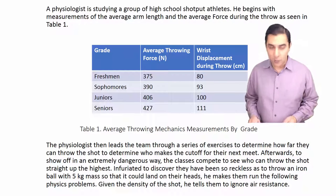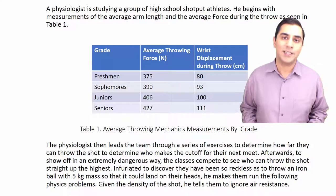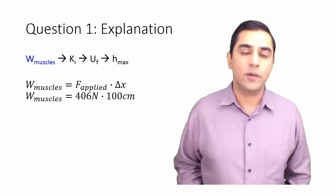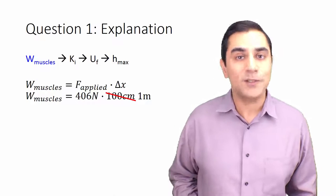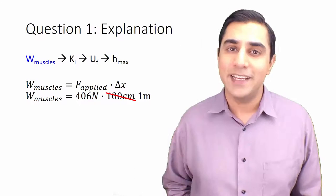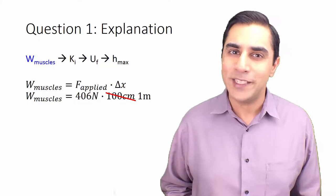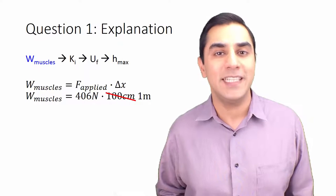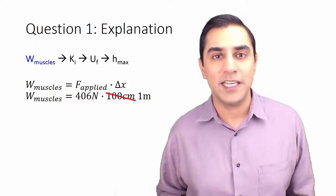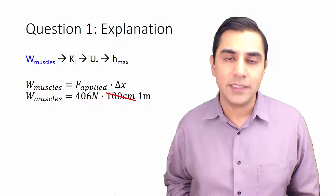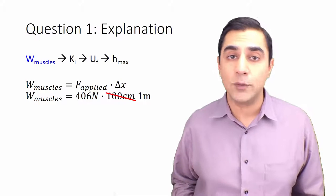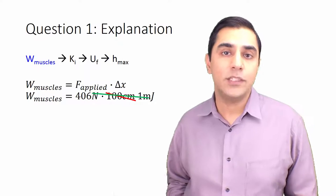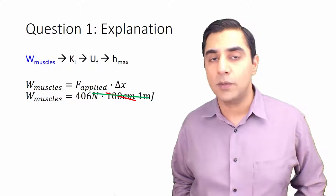The problem is that newtons times centimeters is not a real unit, so we convert 100 centimeters into meters. There are 100 centimeters in one meter, so that's conveniently a distance of one meter. This sounds overly convenient, but the MCAT will generally give you numbers that are easier than almost anything you'll find on the average test prep question. Once we have 406 newtons times one meter, we combine the units: a newton times a meter equals one joule. So 406 joules is the work of the muscles.